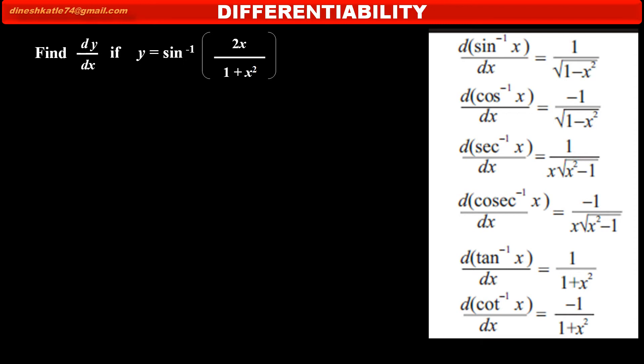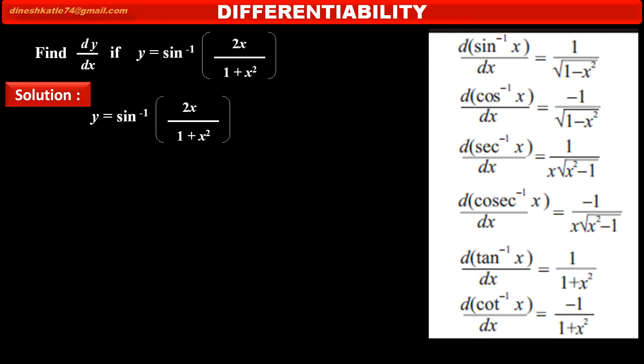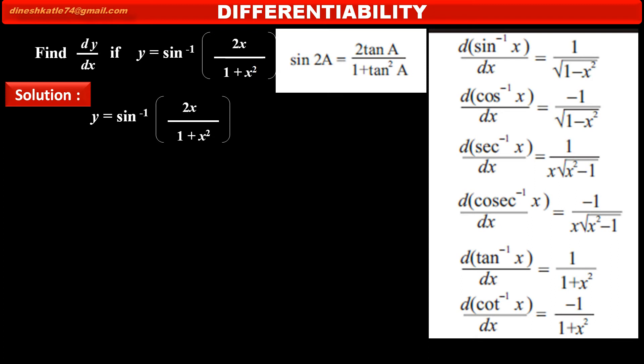By using these formulae, we have to solve the derivative of inverse trigonometric functions. Now, we have to solve the derivative of y is equal to sin inverse of 2x upon 1 plus x square. See, the function in the bracket, 2x upon 1 plus x square, is matching with the formula sin 2a is equal to 2 tan a upon 1 plus tan square a. So, to make this problem easy, we have to put x is equal to tan theta in the given function.